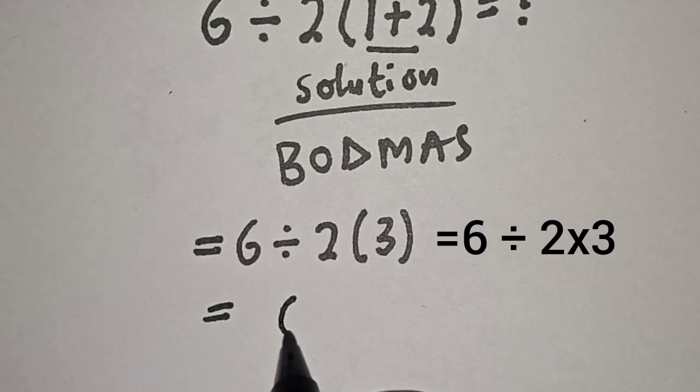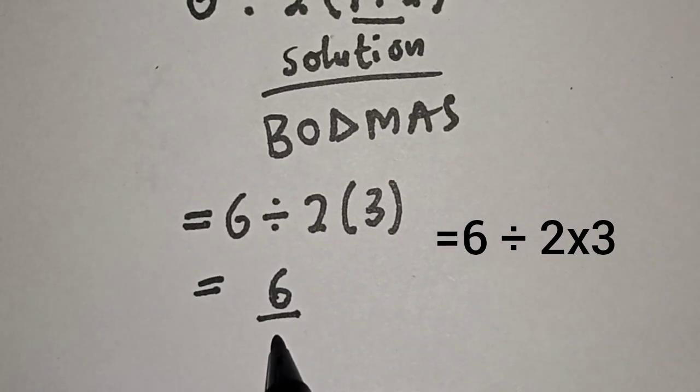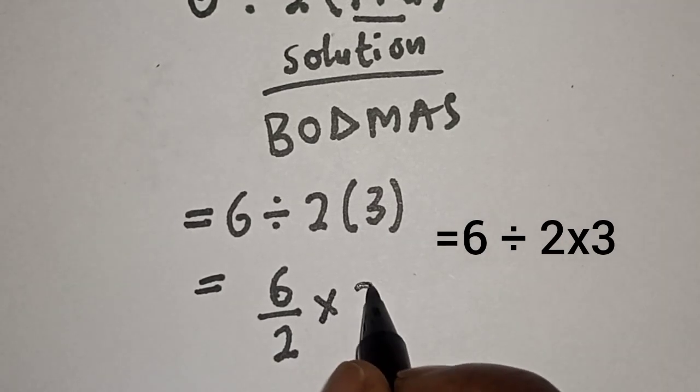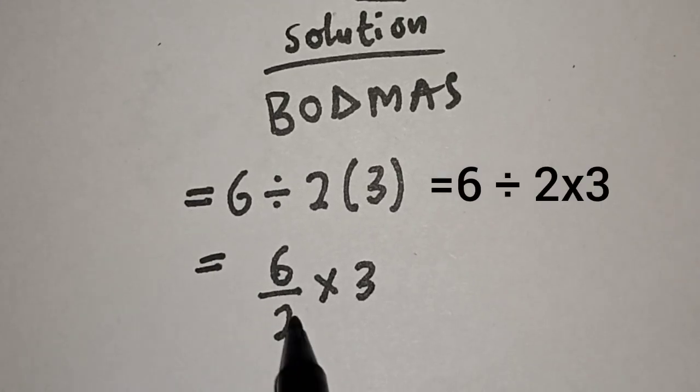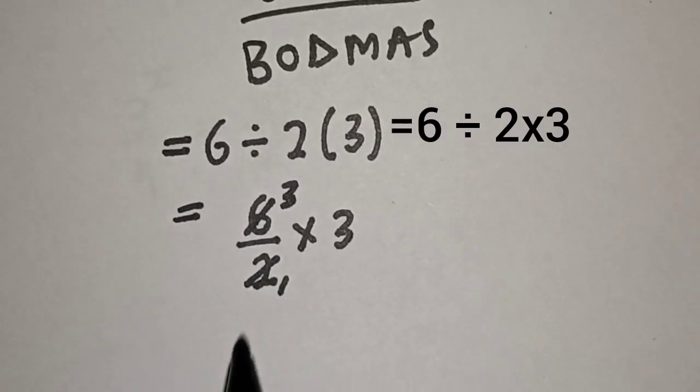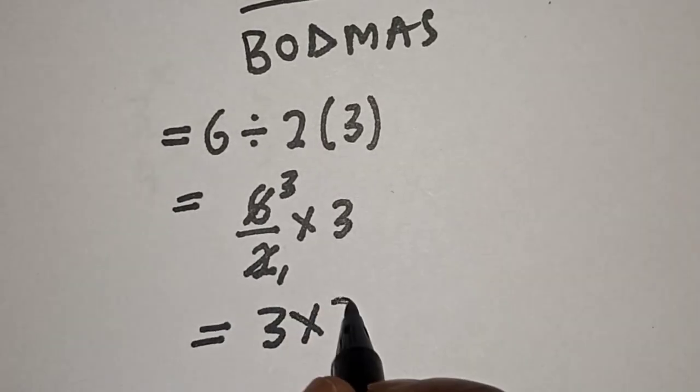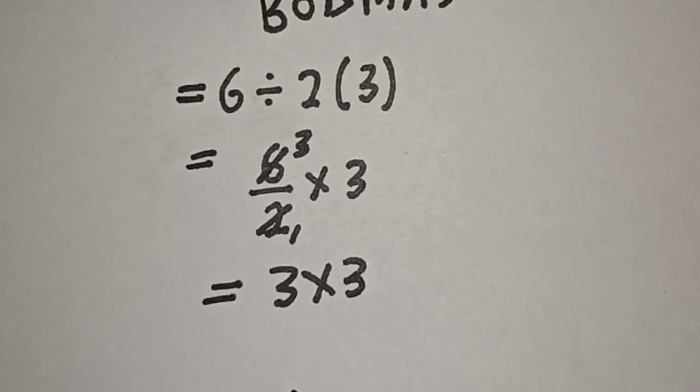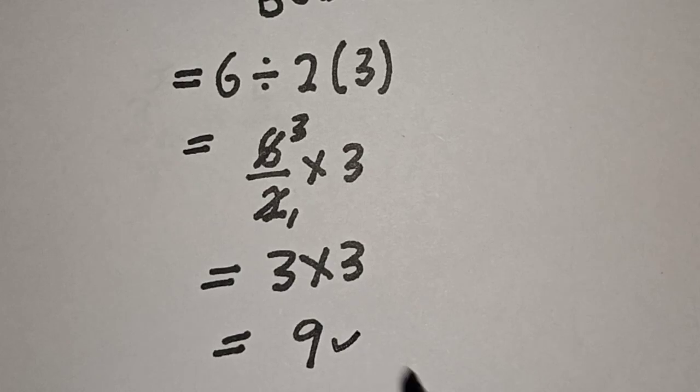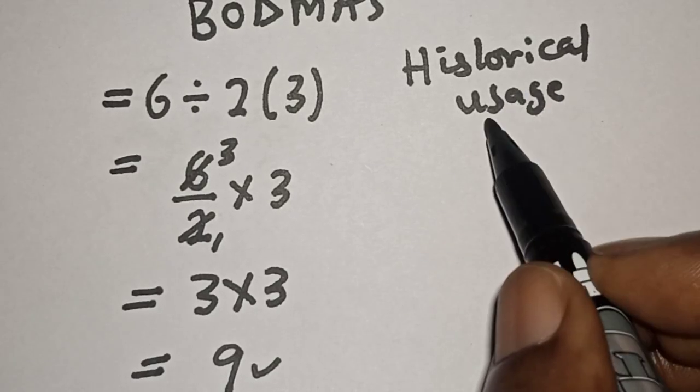This is equal to 6 divided by 2 multiply by 3. Then 2 here, 1, 2 here, 3. This is equal to 3 times 3 and our answer is equal to 9. This is the answer. Now let's consider historical usage.